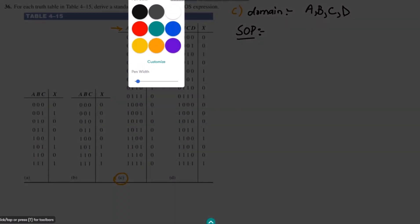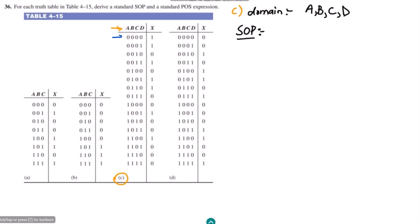The first term where the output is one, and this one is also one — you can see that the output for those two terms is one. Similarly this one, this one, and so on. These are seven terms for which the output is one. Let me write them: zero zero zero zero, zero zero zero one, zero zero one zero, zero zero one one.